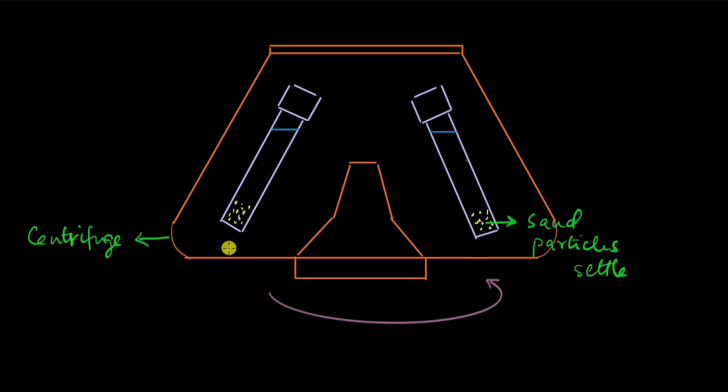...like biomolecules such as proteins or DNA, which are much smaller than sand particles or us in a merry-go-round, even they can settle down with such high speeds. And this process of taking an aqueous solution or suspension and rotating it in a centrifuge is called centrifugation.